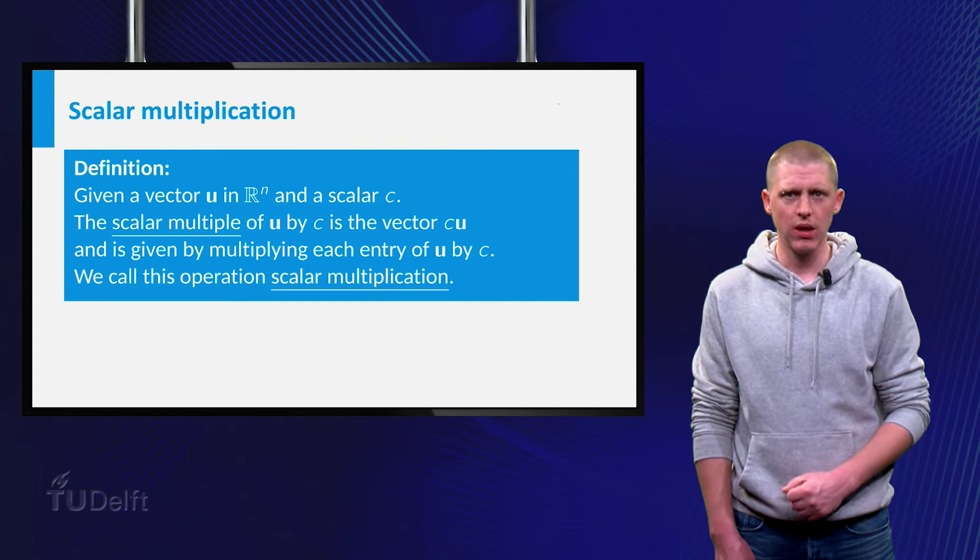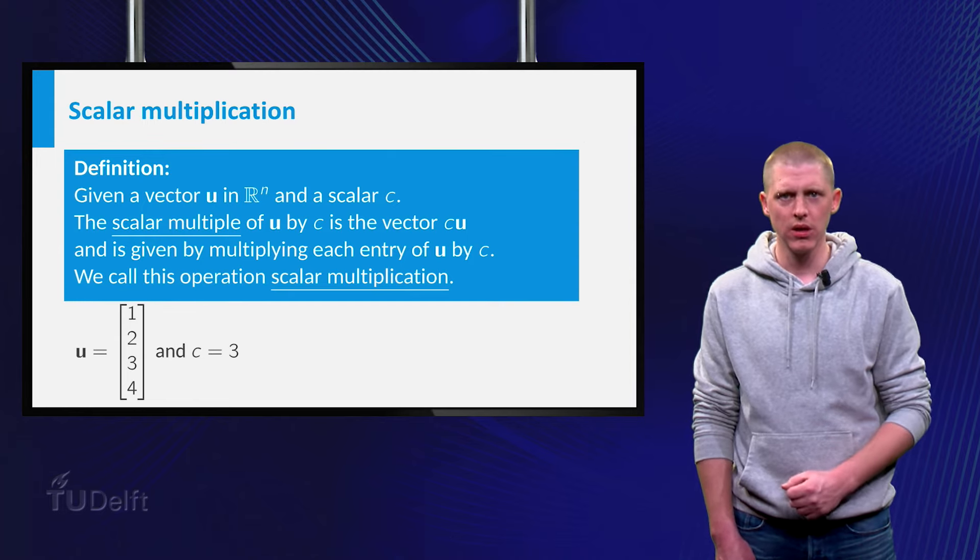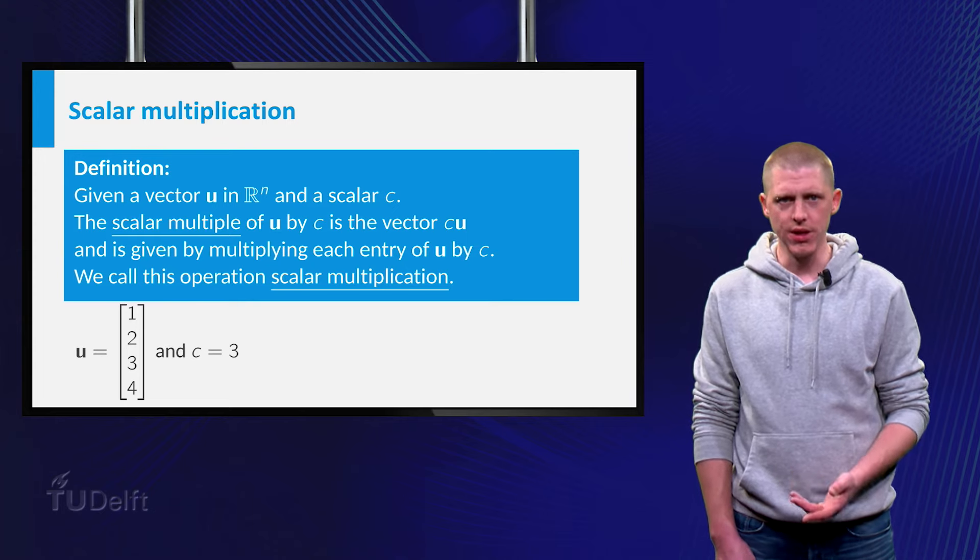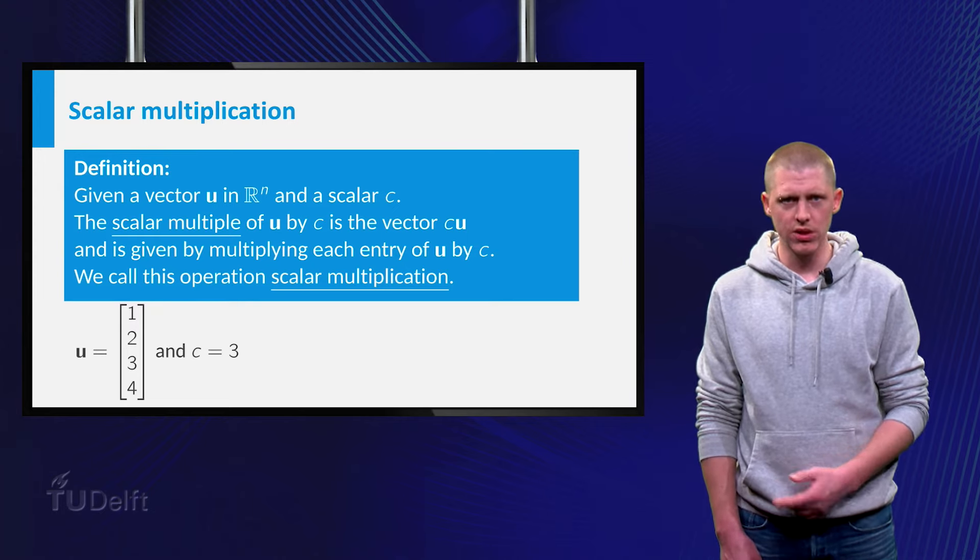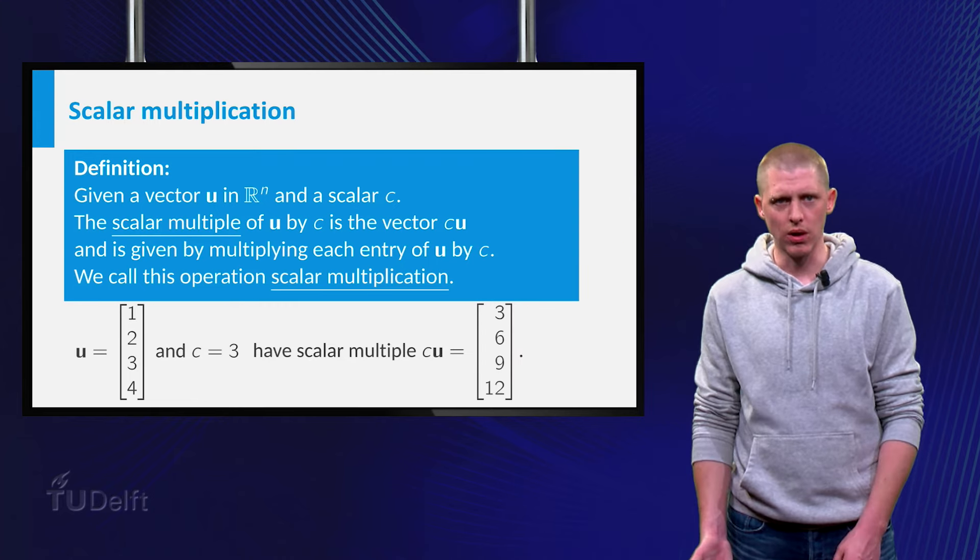As an example, let us multiply a vector from R4 by a scalar. Take u as 1, 2, 3, 4 and c as 3. The scalar product of u by c is now 3, 6, 9, 12.